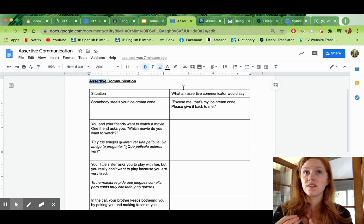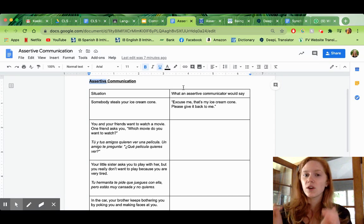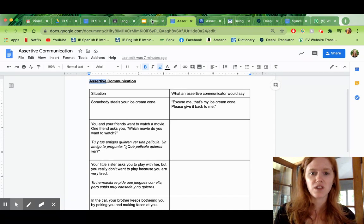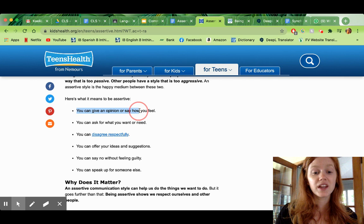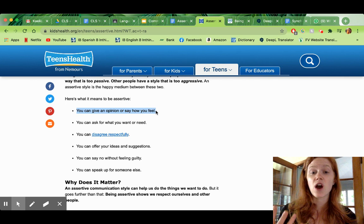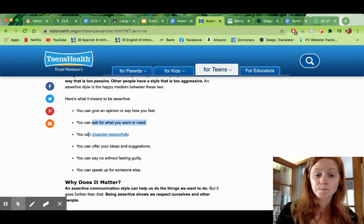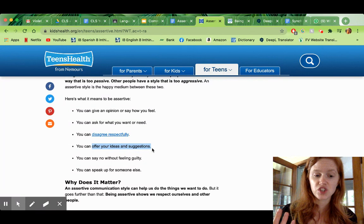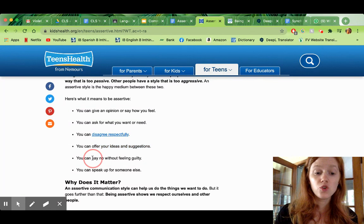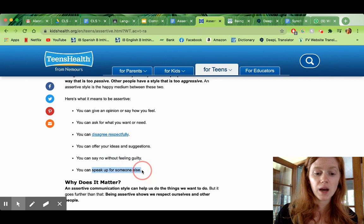So they don't avoid talking about what they think and feel, but they don't say it in a mean way either. Okay, so it's kind of in the middle between some of the other styles of communication. So when you are an assertive communicator, you can give an opinion or say how you feel. You ask for what you need or want. You disagree respectfully. You can offer your ideas and suggestions. You can say no without feeling guilty. And you can speak up for someone else.